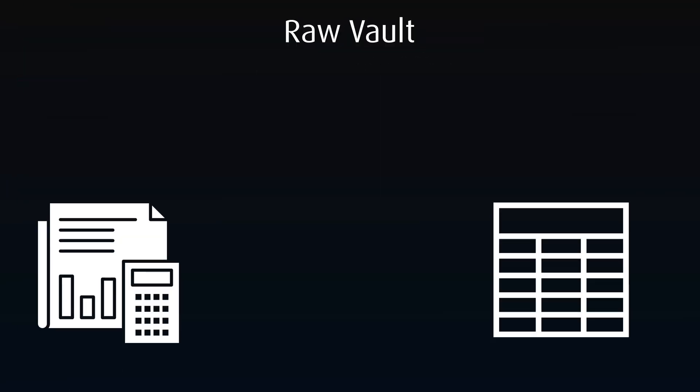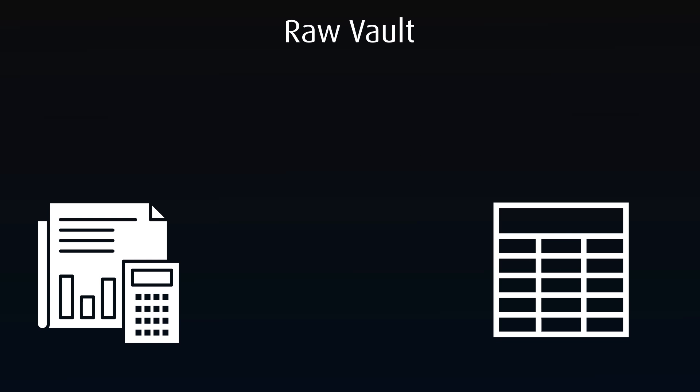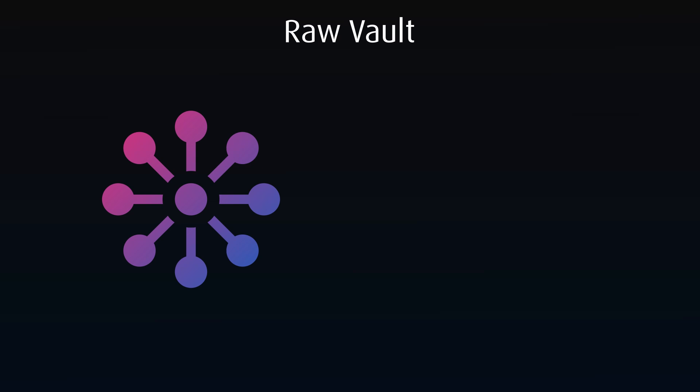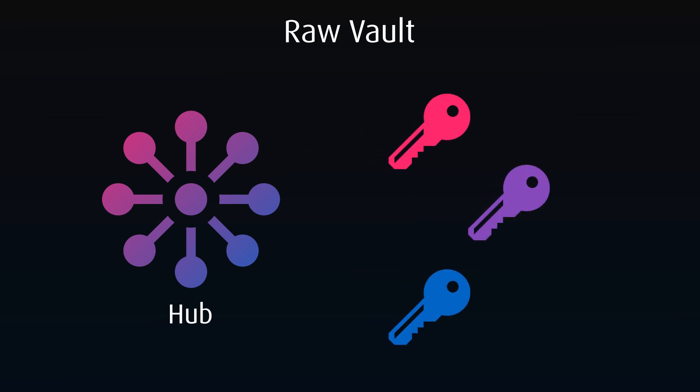The key modeling happens in the raw vault. The core idea is that business keys only change with significant business changes, so they are the most stable. Picking business keys for data is critical, and those keys are separated from the attribute data in key tables called hubs. Hubs contain a list of unique business keys unlikely to change, along with a surrogate key for each hub record and metadata describing the origin of the key.